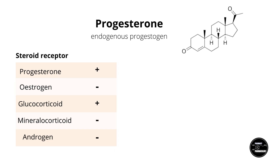Progesterone has an anti-estrogenic effect, and does so not by specifically blocking the estrogen receptor, but by down-regulating estrogen receptors and reducing the numbers. Progesterone and estrogen, whilst working in concert together, also oppose a lot of each other's actions, which I'll come back to later. Progesterone also blocks the androgen receptor and the mineralocorticoid receptors, so it has an anti-androgen and anti-mineralocorticoid effect, which I'll go more into later as well.